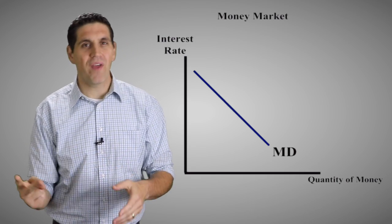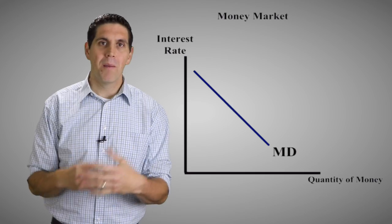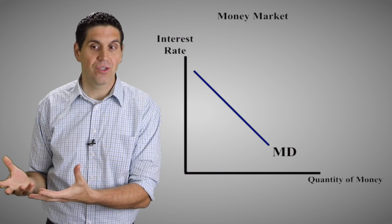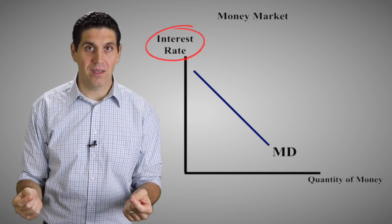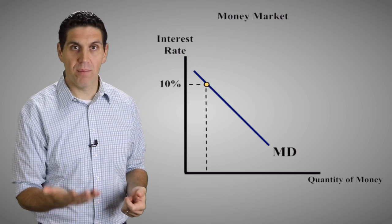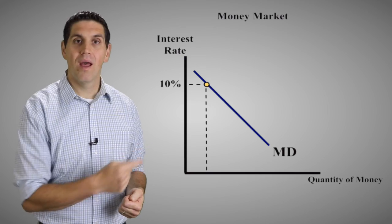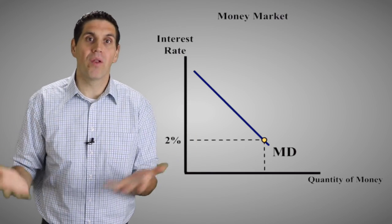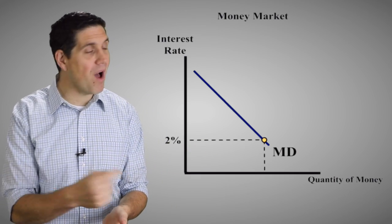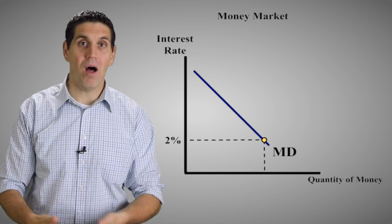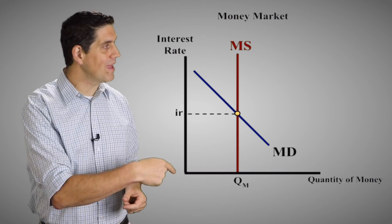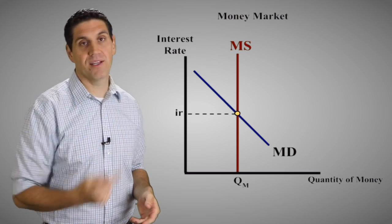Think of it this way: assume people can do one of two things with their money — they can either buy interest-bearing assets like bonds and earn interest, or they can just hold it in cash. How do they decide? They look at the interest rate. When the interest rate is very high, people want to go buy bonds and the quantity demanded for cash is very low. When the interest rate is really low, people might as well keep all their money in cash since they're not getting a very high return on bonds — they keep all their assets liquid. The supply of money is vertical, set by the central bank, and together supply and demand set the nominal interest rate.